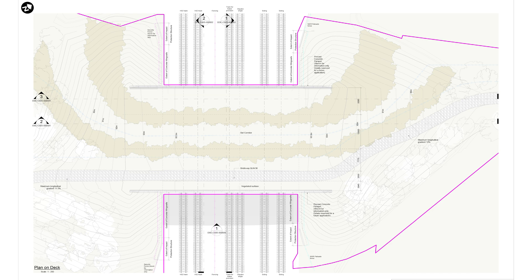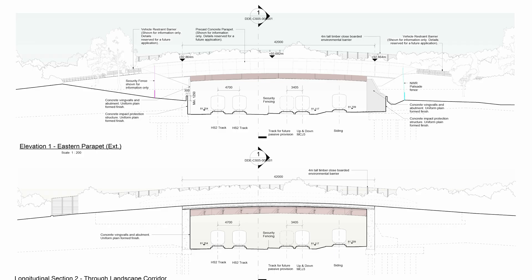This overhead plan shows how the tracks are spaced out, and you'll also notice in the middle it says Bat Corridor. This green overbridge will be planted with hedges and trees to provide flight lines for the various species of bats in the local area. We now come to GUN 28 Green Accommodation Overbridge. The supporting structure of this is made of weathered steel, and has the same concrete parapets as many of the other bridges we've seen.